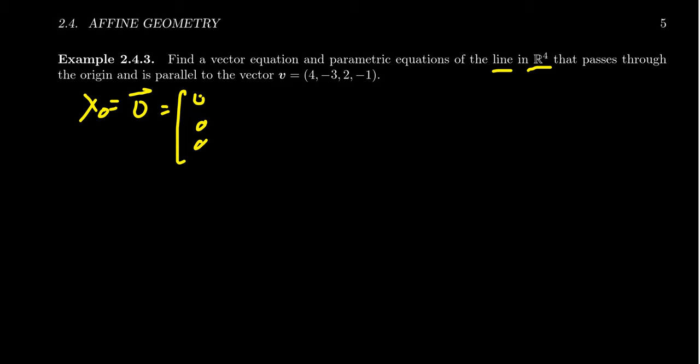Which would be (0, 0, 0, 0) in 4 space. And then, again, this is parallel to the vector (4, -3, 2, -1).